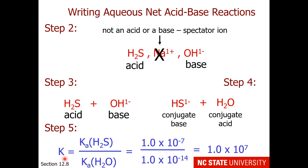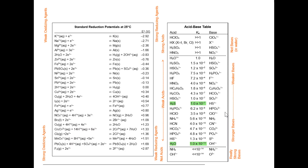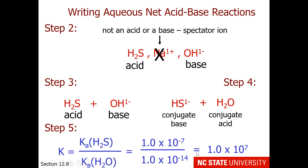The last step is to decide upon the arrow. Our equilibrium constant is the Ka of H₂S (the reacting acid) over the Ka of H₂O (the produced acid). From the table, the Ka of H₂S is 1×10⁻⁷ and the Ka of water is 1×10⁻¹⁴. When we substitute those values, our equilibrium constant is 1×10⁷ — a huge number. So we use a reaction arrow to the right for this net acid-base reaction.